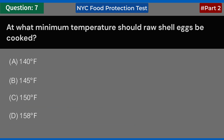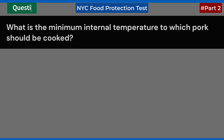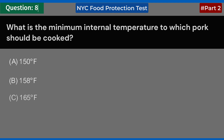At what minimum temperature should raw shell eggs be cooked? A. 140 degrees Fahrenheit. B. 145 degrees Fahrenheit. C. 150 degrees Fahrenheit. D. 158 degrees Fahrenheit. Answer: B. 145 degrees Fahrenheit.